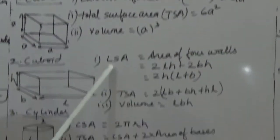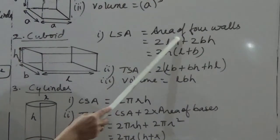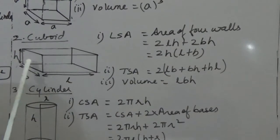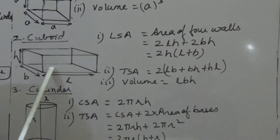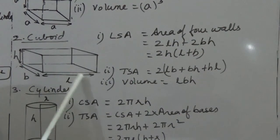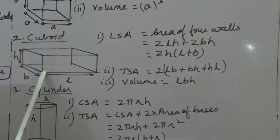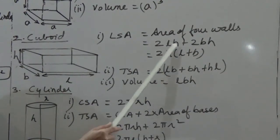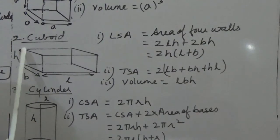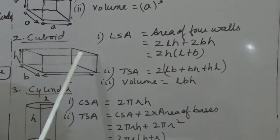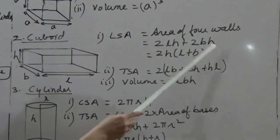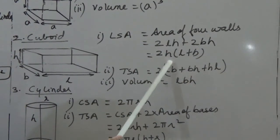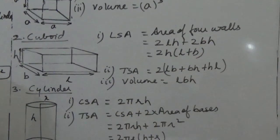Next is the cuboid. The lateral surface area means the area of 4 walls — leaving out the ceiling and floor. The front face area is L×H and the back face is also L×H, giving 2LH. The two side walls each give B×H, giving 2BH. Taking 2H common, the lateral surface area of a cuboid is 2H(L + B).